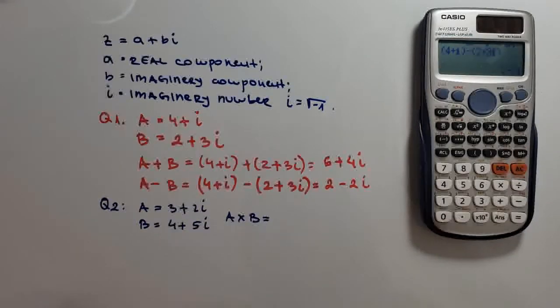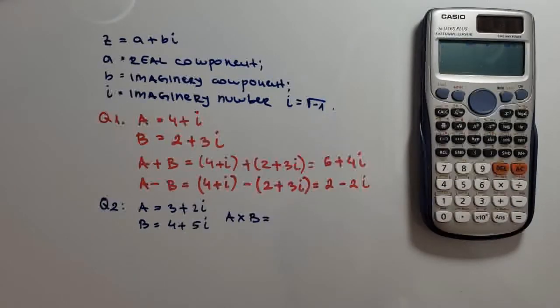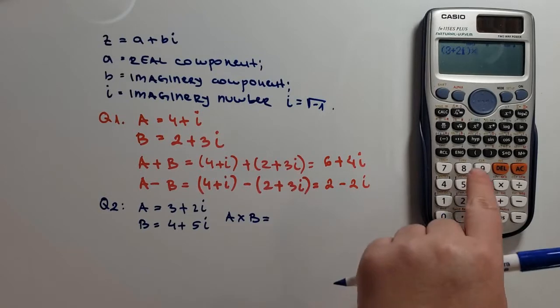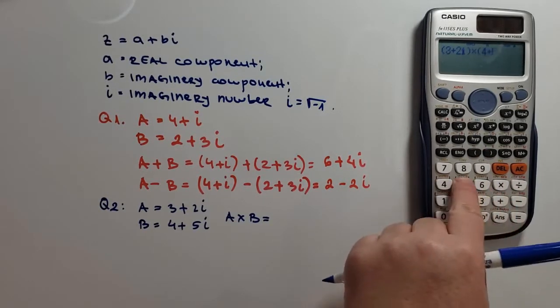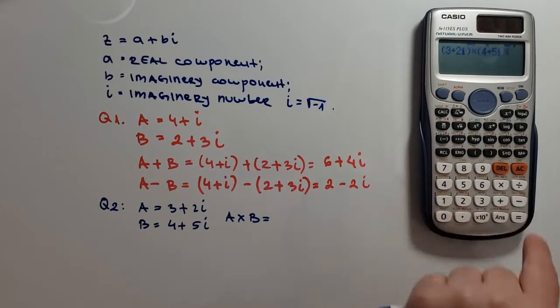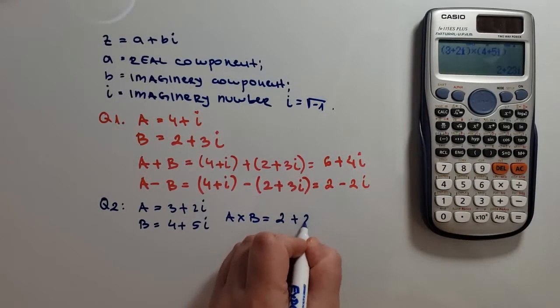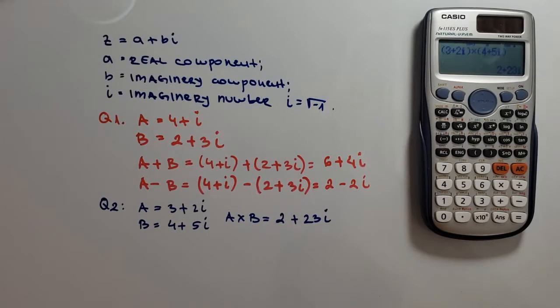Now, for multiplication, we must use brackets, and be careful with that. So let's go and insert the values. I will clear this one here. And now we have 3 plus 2i, I will close the bracket, times 4 plus 5i. And this equals to 2 plus 23i. And you see how simply this is using the Casio calculator.